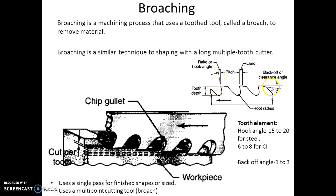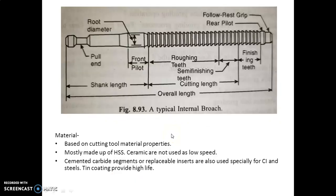It uses a single pass for finished surfaces or sizes. As we have discussed, this is a multi-point cutting tool called a broach. This is a typical internal broach. Material is based on cutting tool material properties and is mostly made up of high-speed steel.